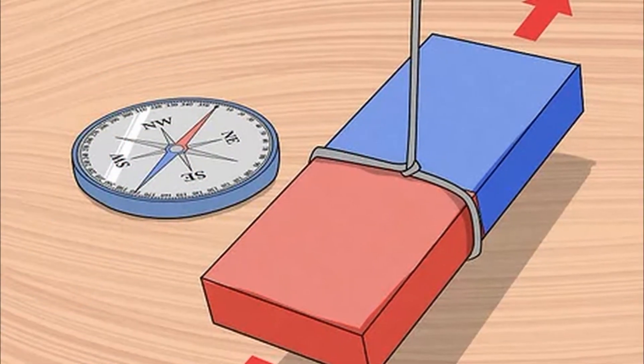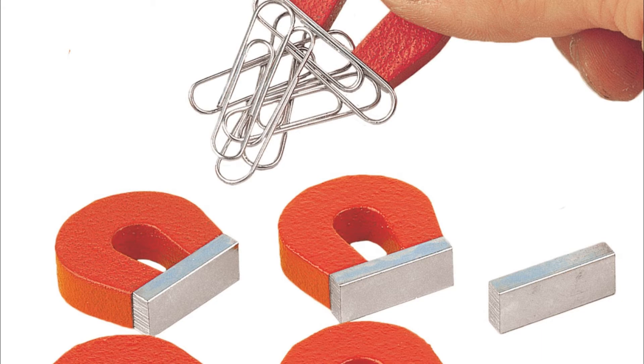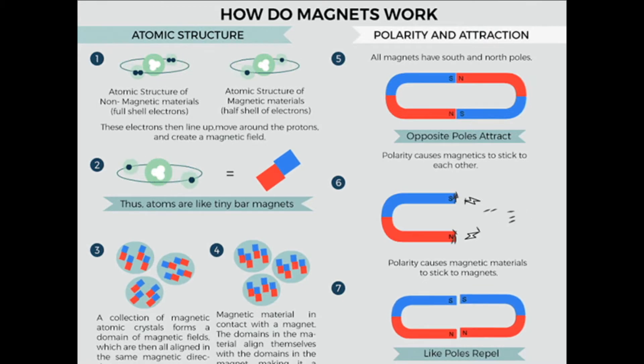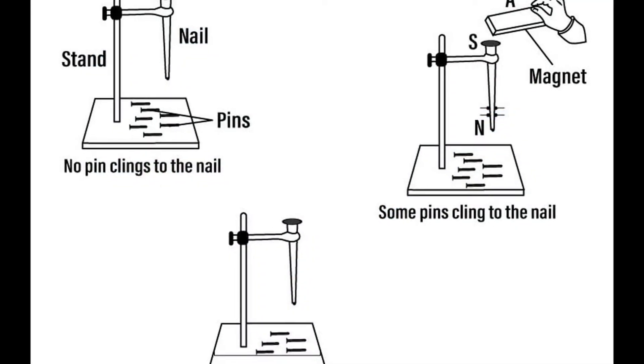What is the test for polarity of a magnet? A magnet attracts a piece of iron as well as the opposite pole of another magnet. Therefore, an object cannot be identified as a magnet simply because it is getting attracted towards a magnet. It could just be a piece of iron.